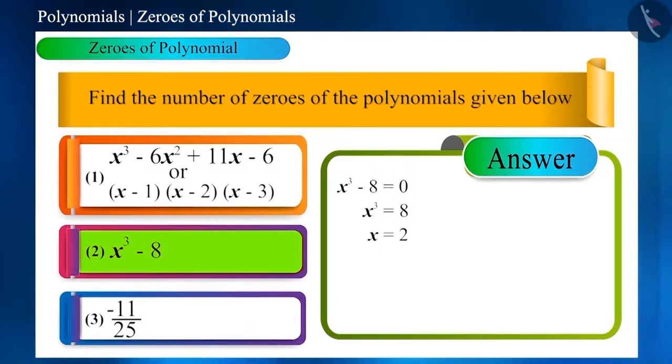But friends, you can also say that x = 2 is a root of equation x³ - 8 = 0, which is being repeated three times. And then you can say that the number of zeros of the polynomial is equal to the highest power of the variable. Both of these statements are correct.